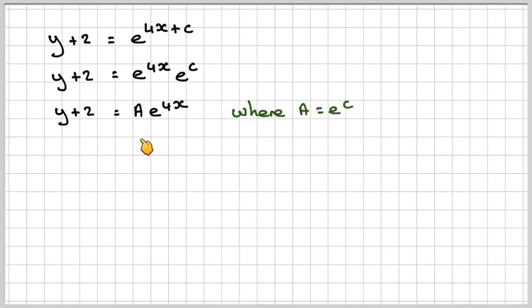So we get y plus 2 is equal to a e to the 4x, and then we'll take the 2 over to the other side and get y is equal to a e to the 4x minus 2.